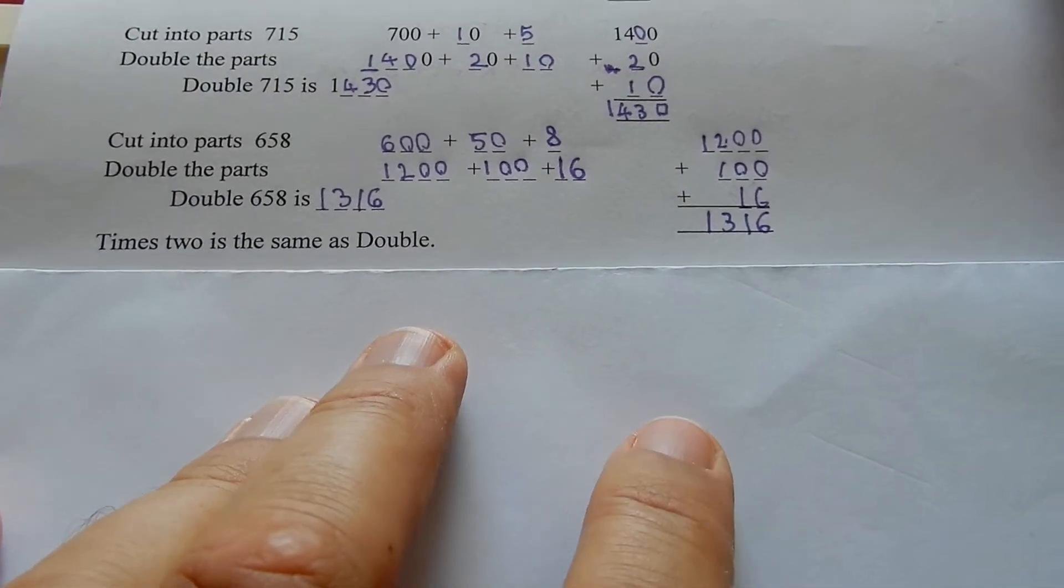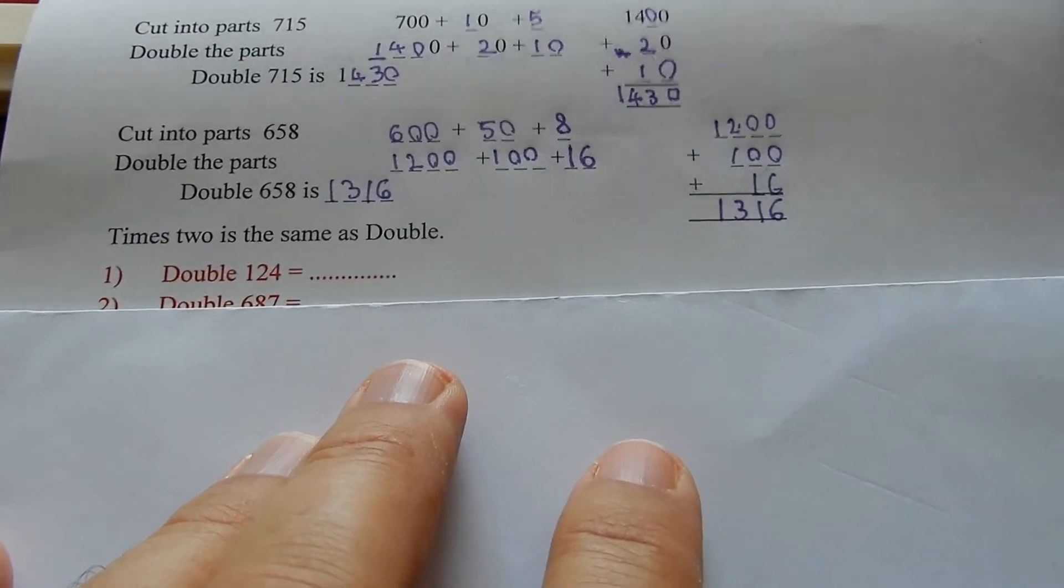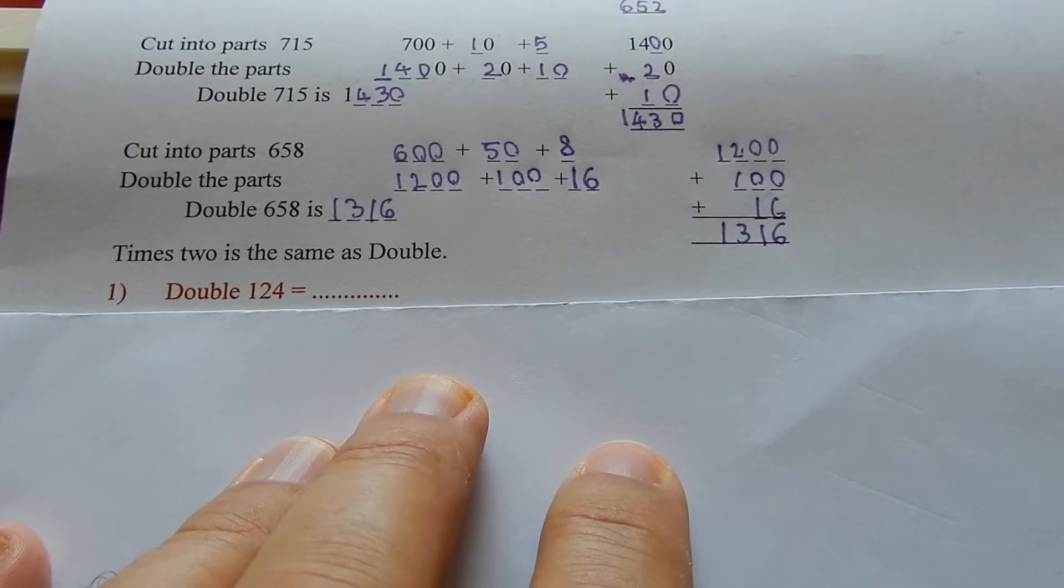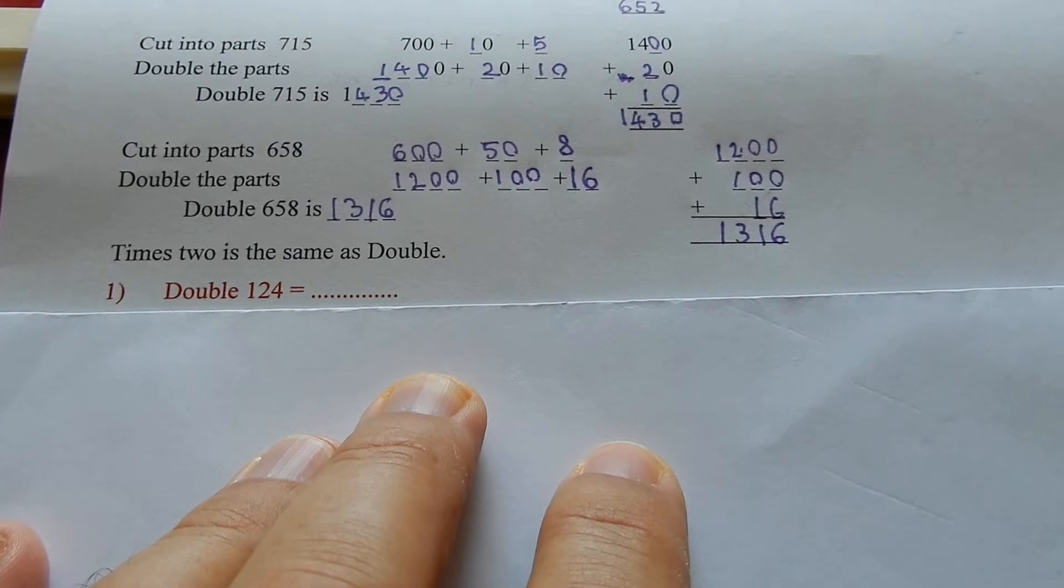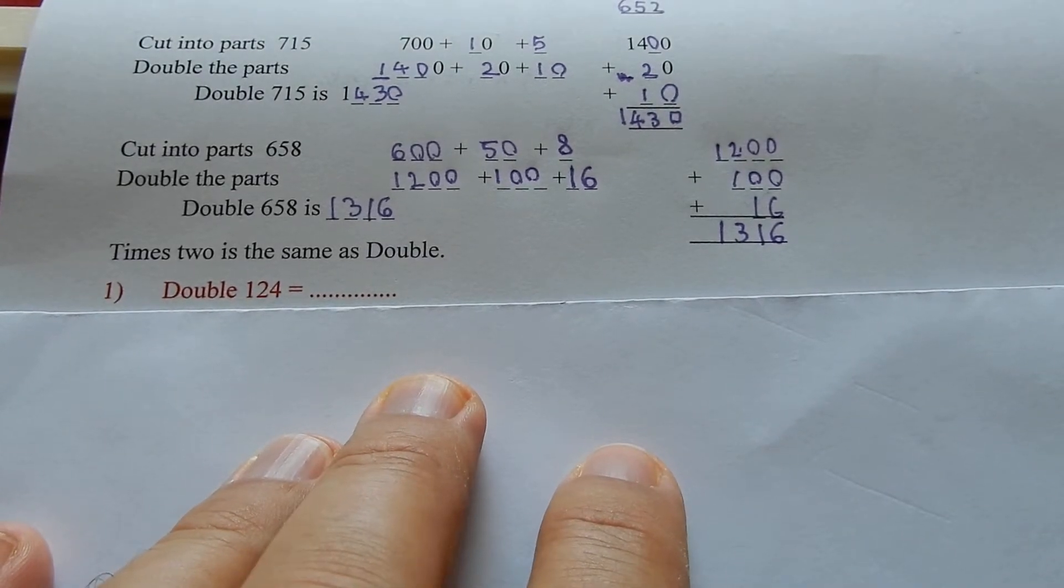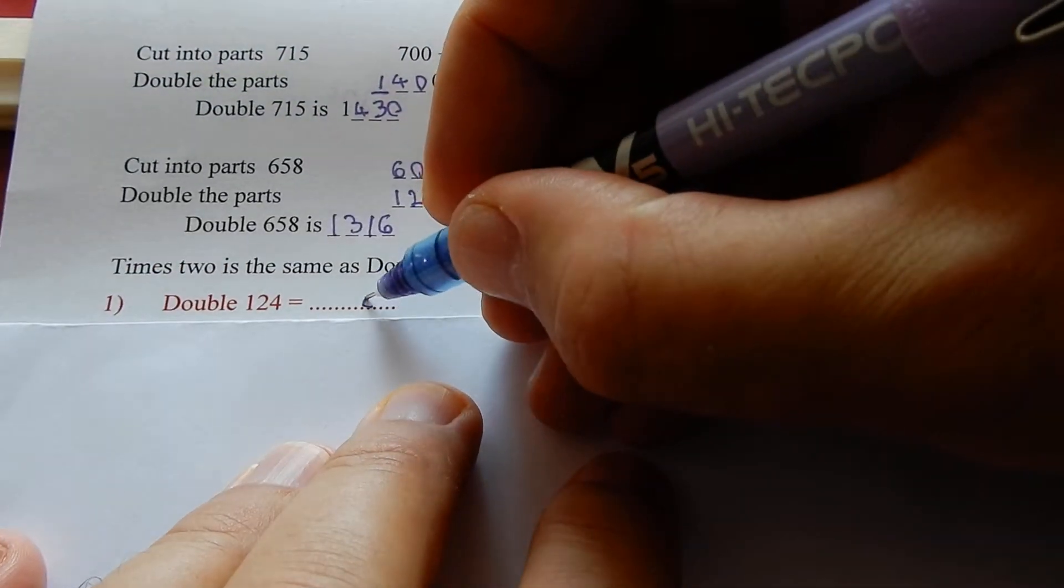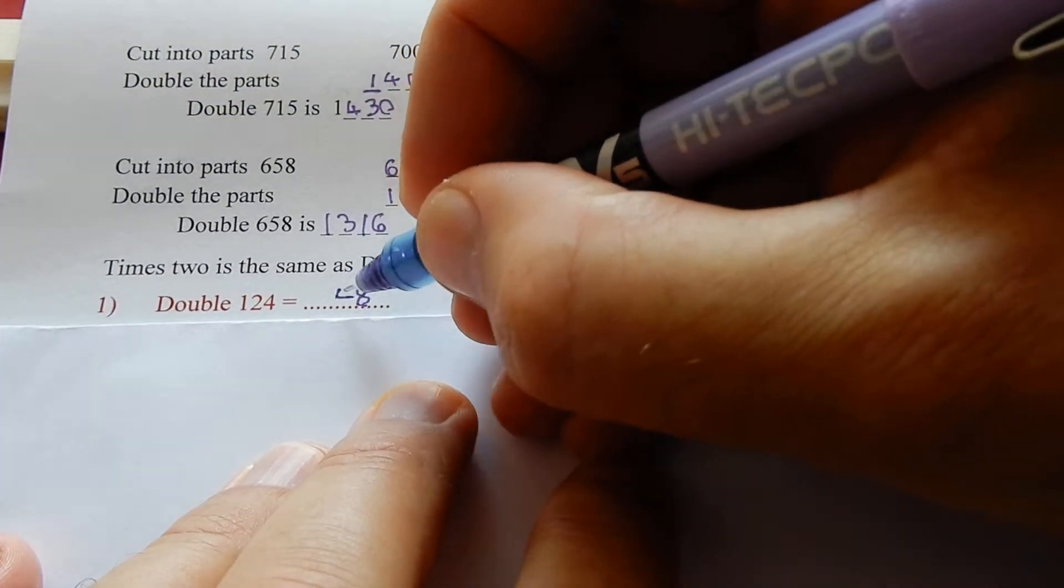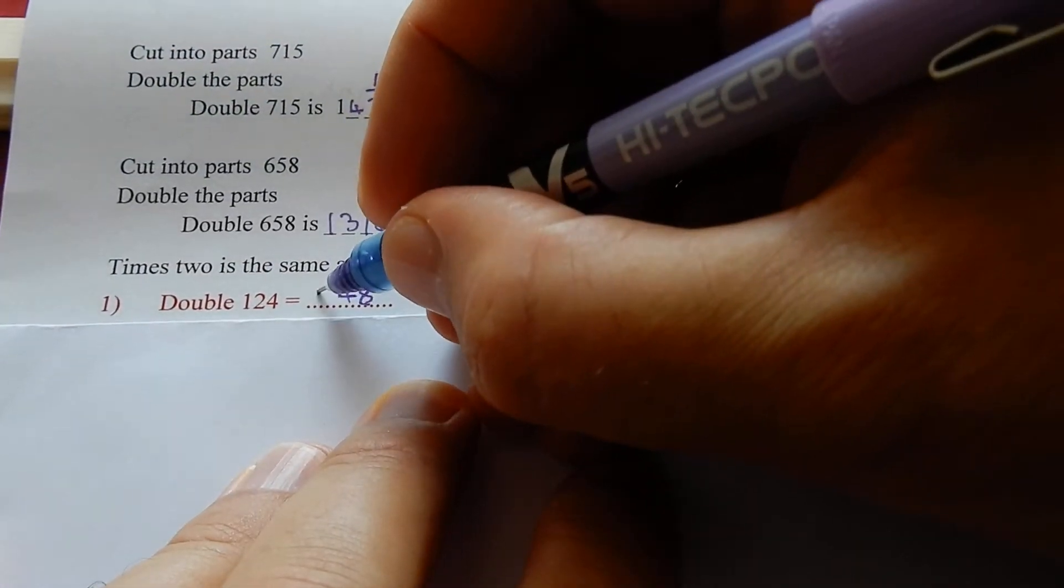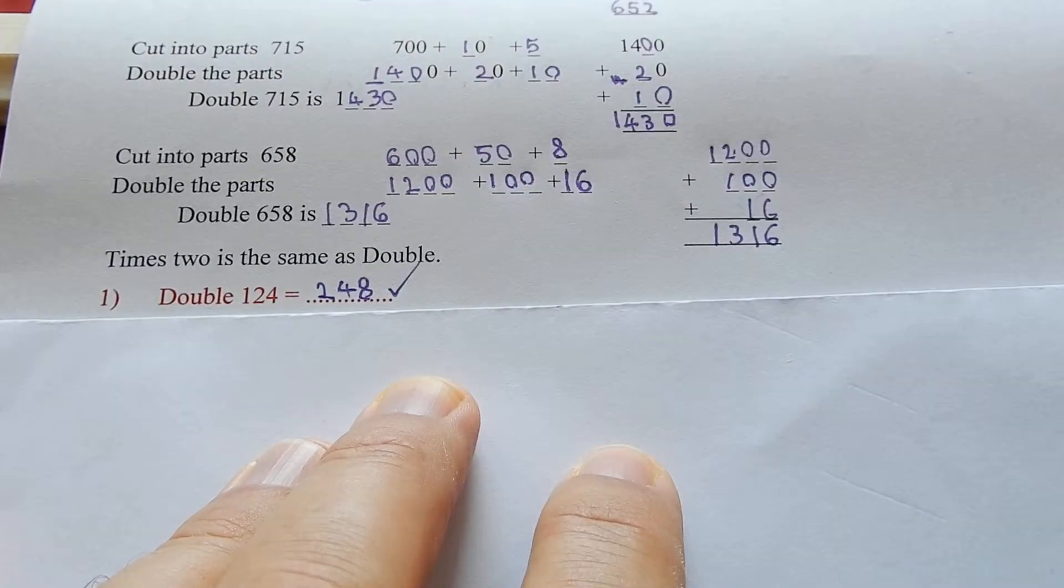Question: double 124. Split it into parts in your head, that's 100 plus 20 plus 4. Double the 4 is 8, double the 20 is 40, double the 100 is 200. 248, tick.